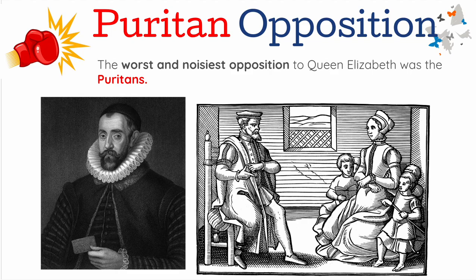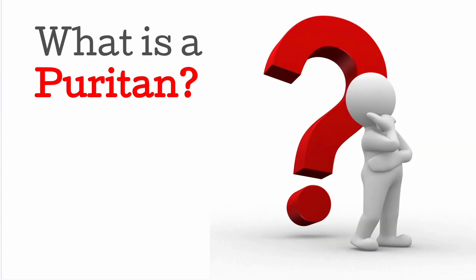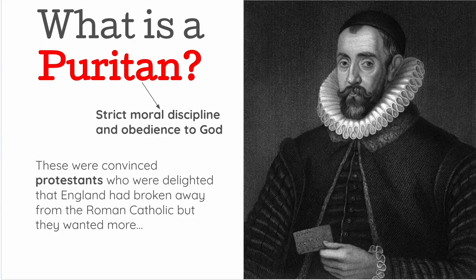One of the biggest oppositions you need to know for your exam is the Puritan opposition. These were known as the worst and noisiest opposition to Queen Elizabeth. A Puritan is a person with strict moral discipline and obedience to God. These were convinced Protestants who were delighted that England had broken away from the Roman Catholic religion, but they wanted more. Puritans had strict moral discipline, were Protestants, and were against Catholics.